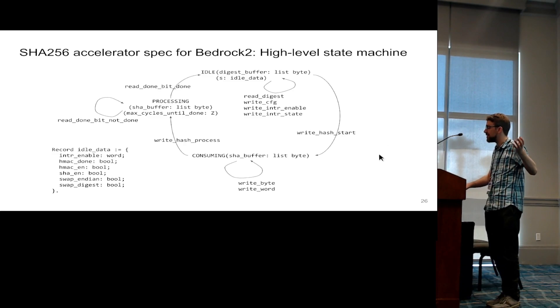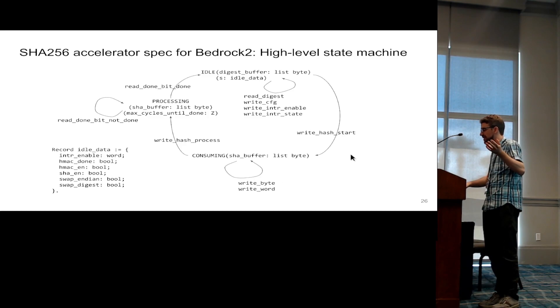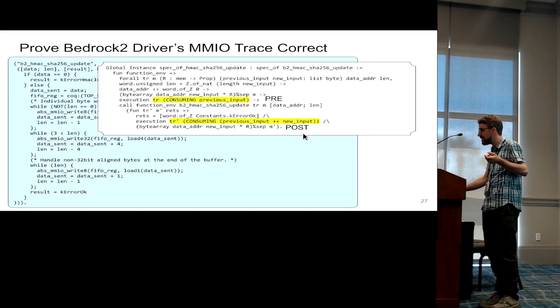where we say, okay, first we have an idle state, and then you can write a certain memory map IO address to say, now I want to start feeding you some data of which I would like you to compute the hash, and that's kind of describing the protocol at the high-level.